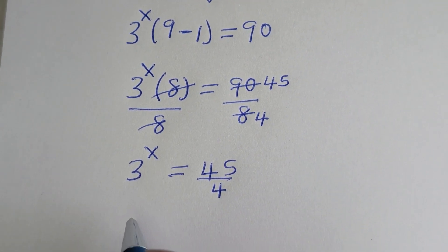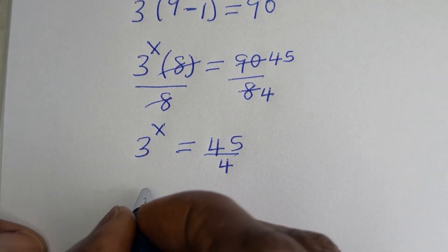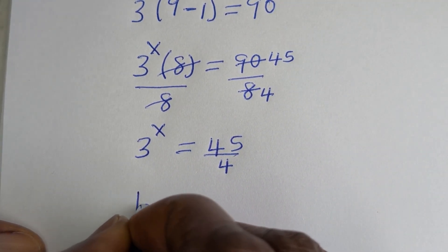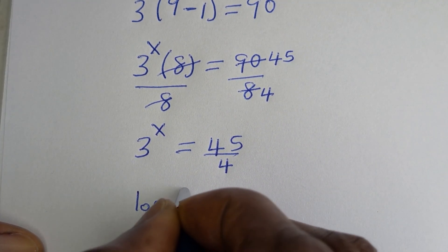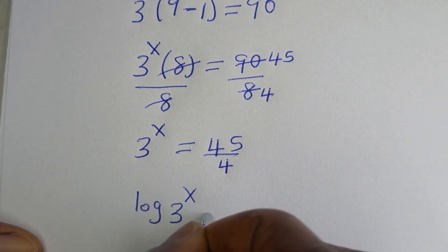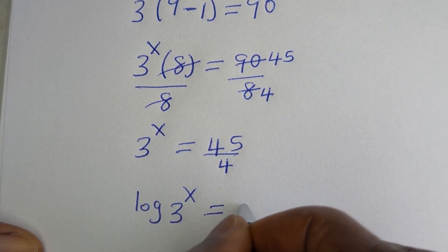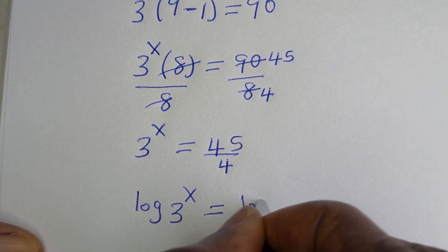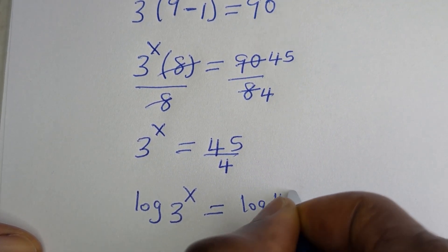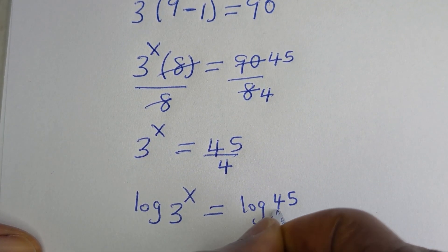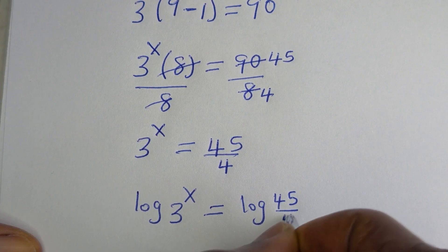3 raised to power S is equal to 45 over 4. Now let us take the log on both sides of this equation. Log of 3 raised to power S is equal to log of 45 over 4.